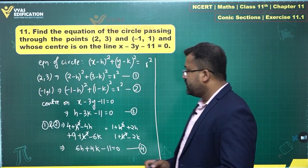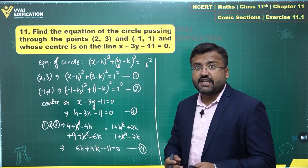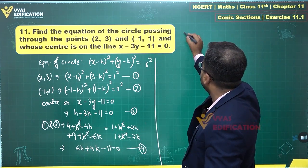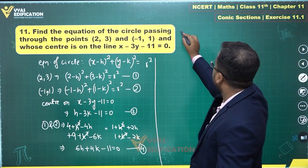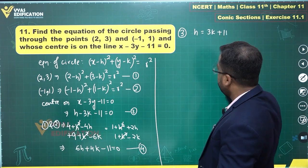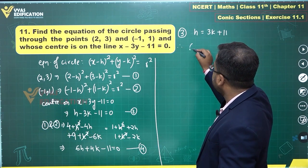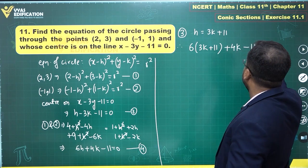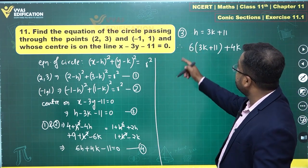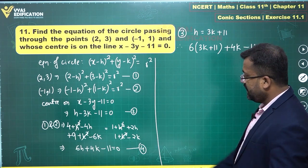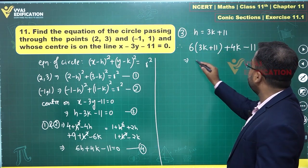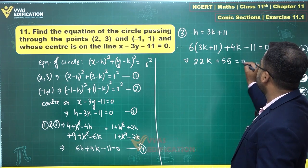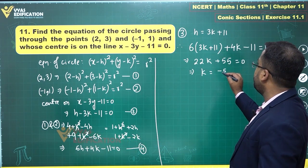Equations 3 and 4 can be solved to get the values of h and k. From equation 3, h equals 3k plus 11. Substituting into equation 4: 6 times 3k plus 11 plus 4k minus 11 equals 0. This gives 18k plus 4k, which is 22k, plus 66 minus 11, which is plus 55, equals 0. Therefore k equals minus 5 upon 2.